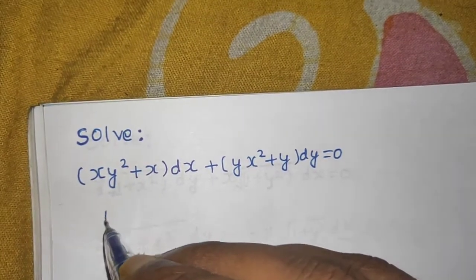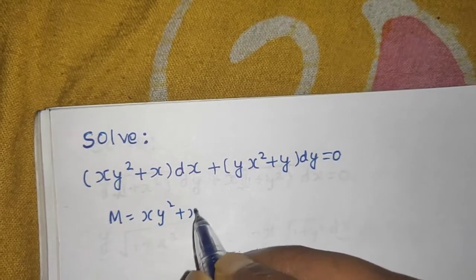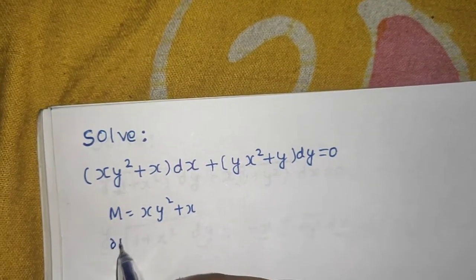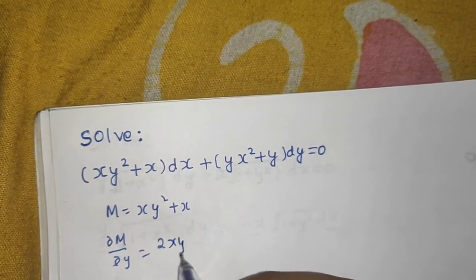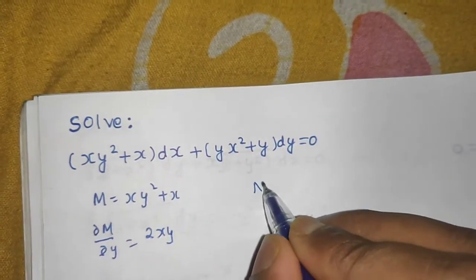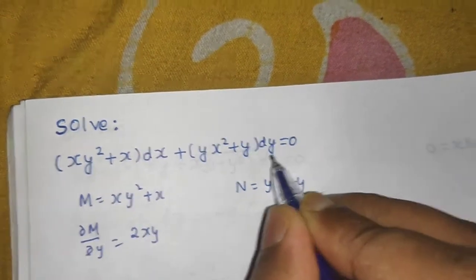We write M = xy² + x. We partially differentiate M with respect to y and get 2xy. Then we have N = yx² + y. Whatever is with dy is your N, whatever is with dx is your M.